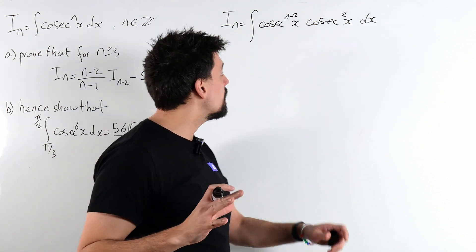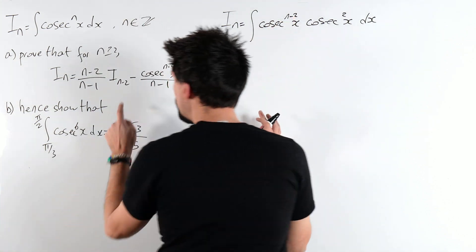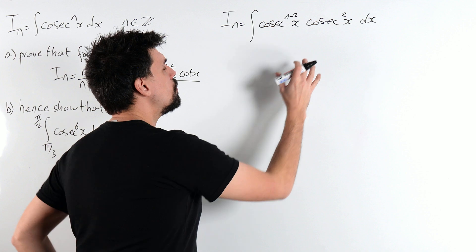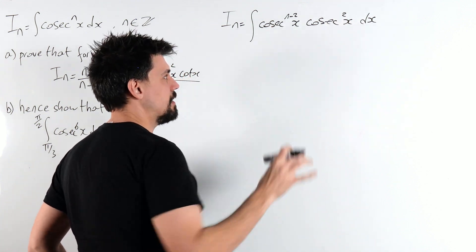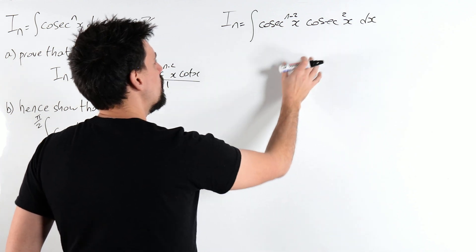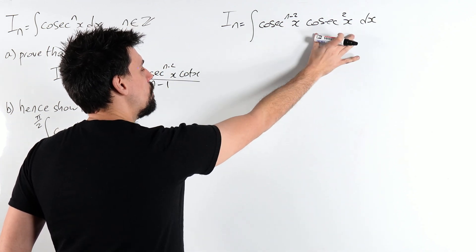Now why do I want a cosec squared? Well first of all I've got that n-2 appearing, probably a good start, but also cosec squared we can integrate directly and that's good for us. So we're going to use integration by parts, so I want one of these to differentiate, one of them to integrate.